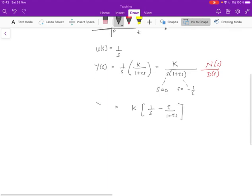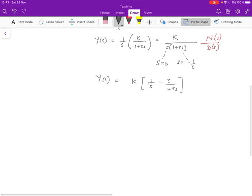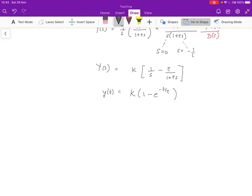If Y(s) is given by this, we now need to invert this to find y(t). Y(t) will be given by just using the Laplace table as k times 1 minus e to the power minus t over τ. This is actually a pretty straightforward thing to plot, and the reason it's straightforward is because we know what e to the minus x looks like.